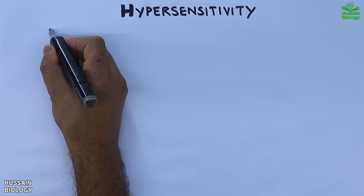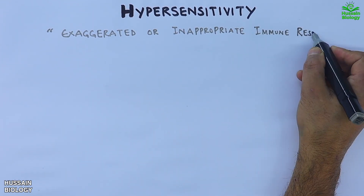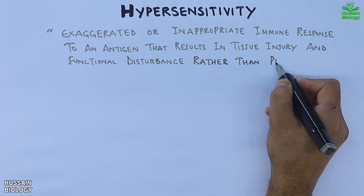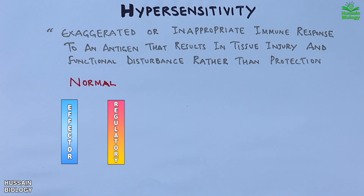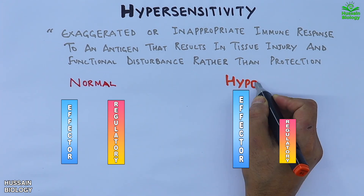Hypersensitivity is the exaggerated or inappropriate immune response to an antigen that results in tissue injury and functional disturbance rather than protection. Under normal conditions, two balanced mechanisms operate in the immune system: the effector mechanism and the regulatory mechanism, both functioning at equilibrium. When the effector mechanism surpasses the regulatory mechanism, that is when we get the hypersensitivity reaction.